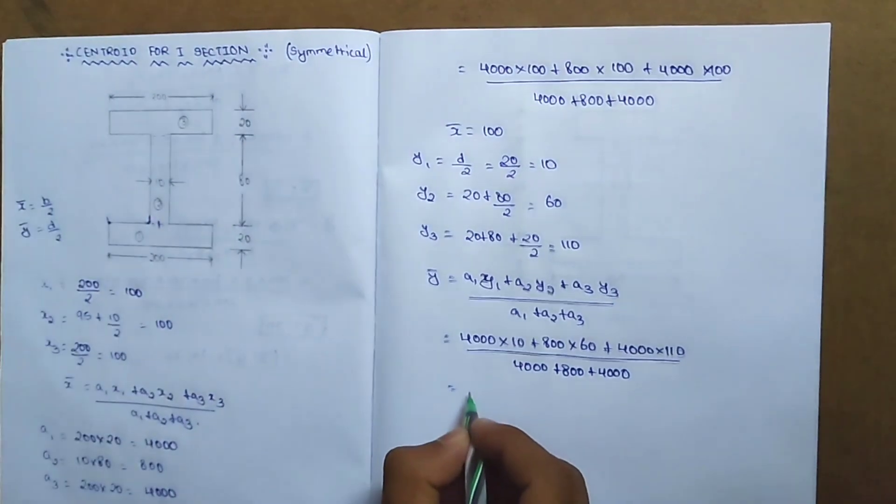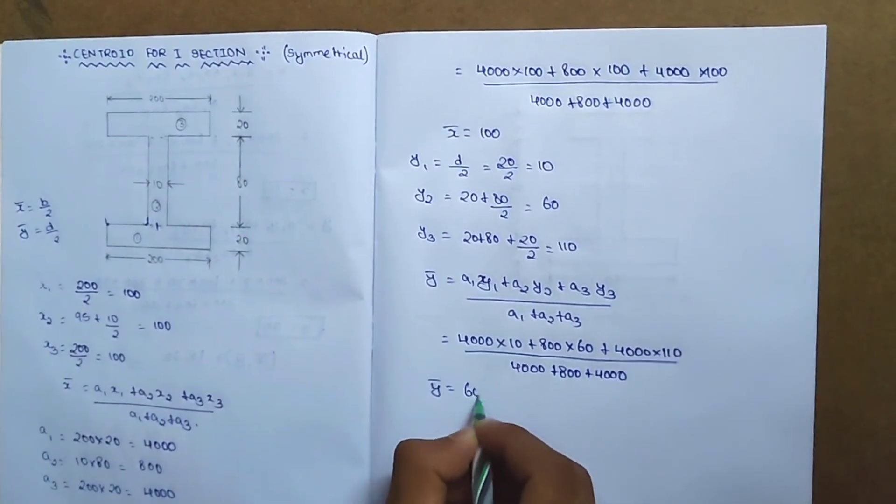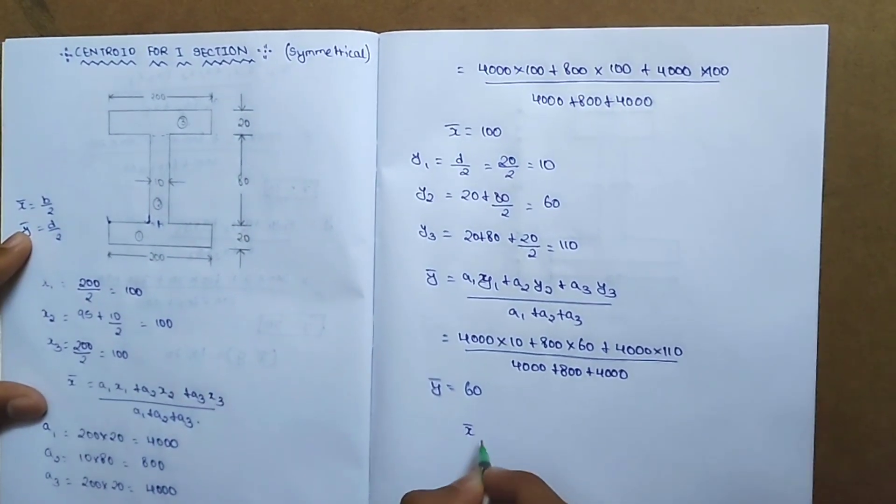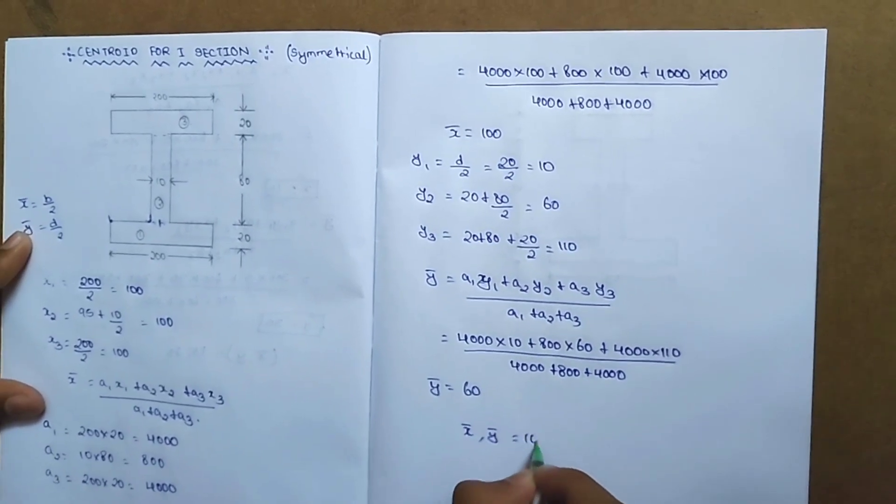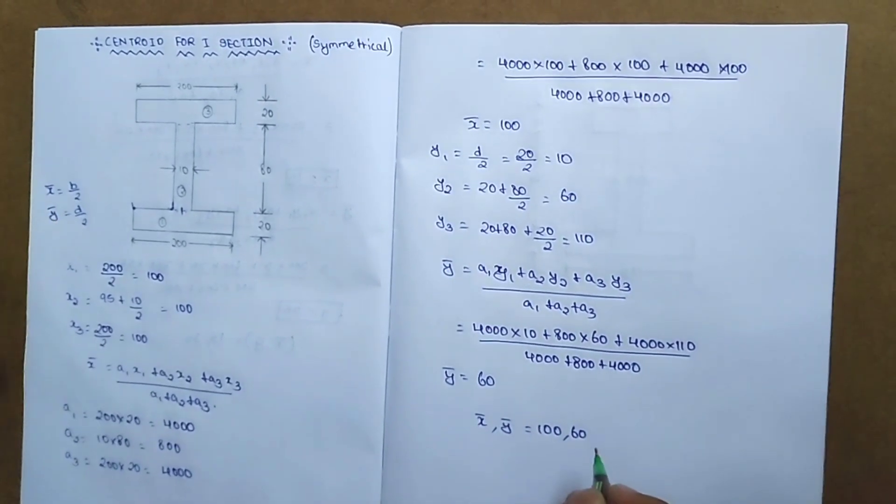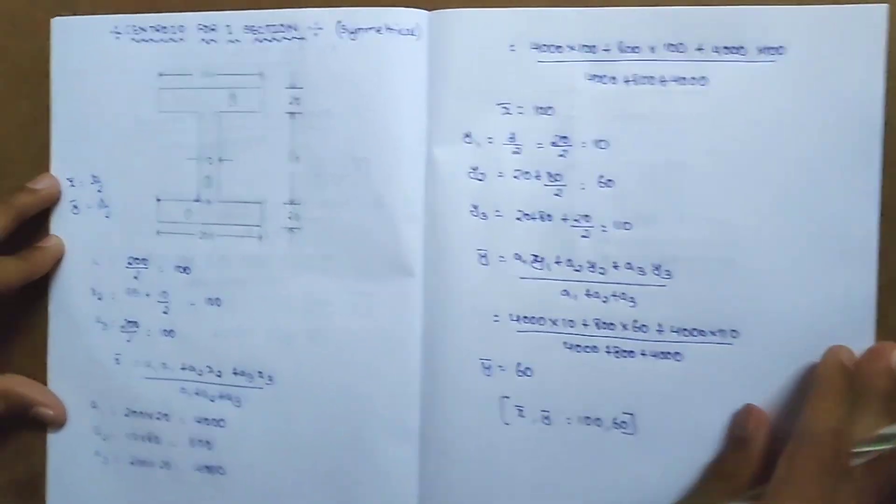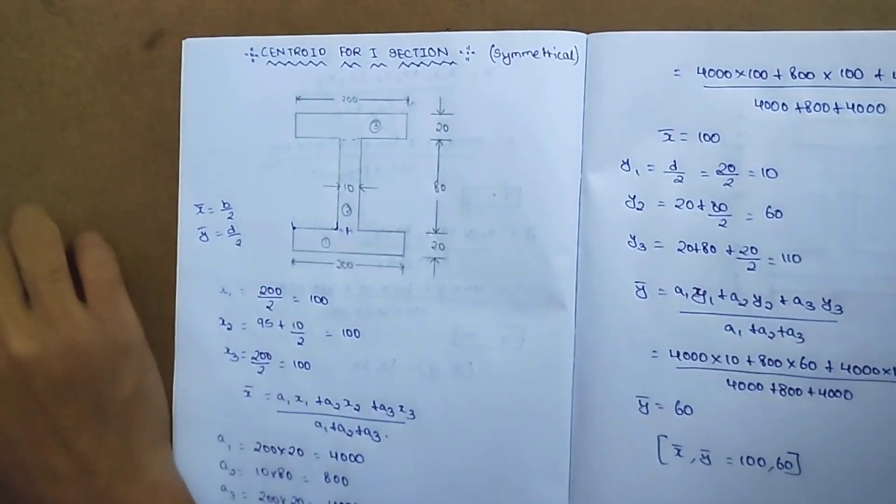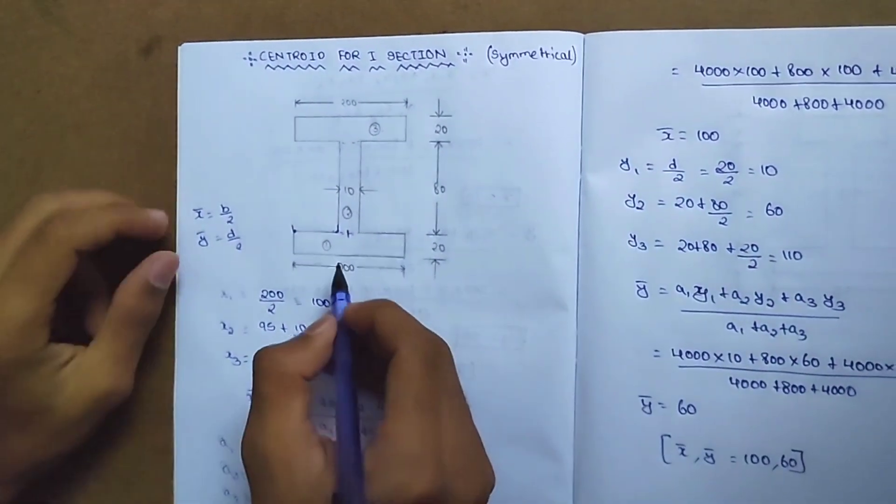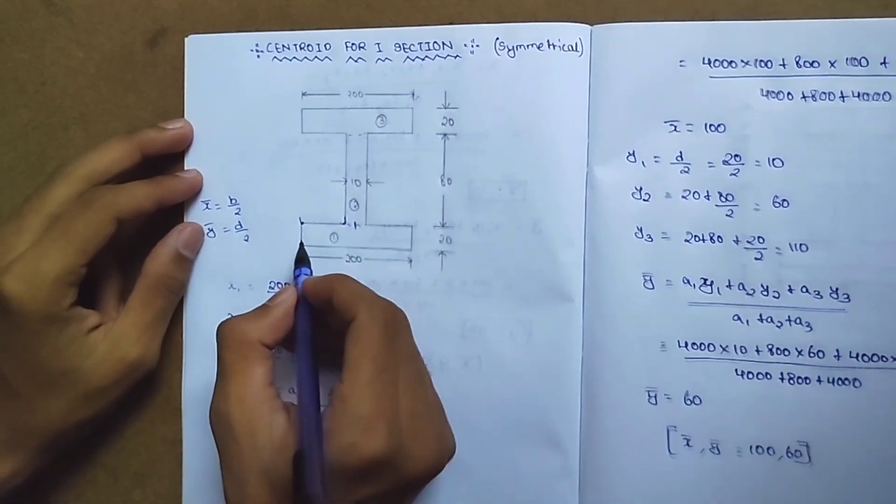y-bar equals 60. So x-bar is 100 and y-bar is 60. Now we plot the centroid. x-bar is 100, y-bar is 60, giving us the coordinates (100, 60).